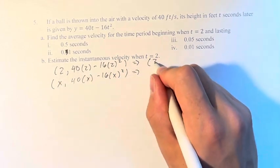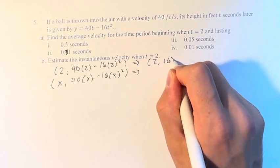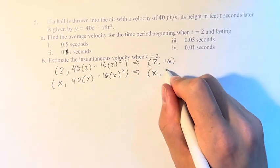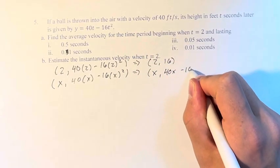This just becomes 2 and then if you calculate this, it's 16. And for any other x, it's x comma 40x minus 16x squared.